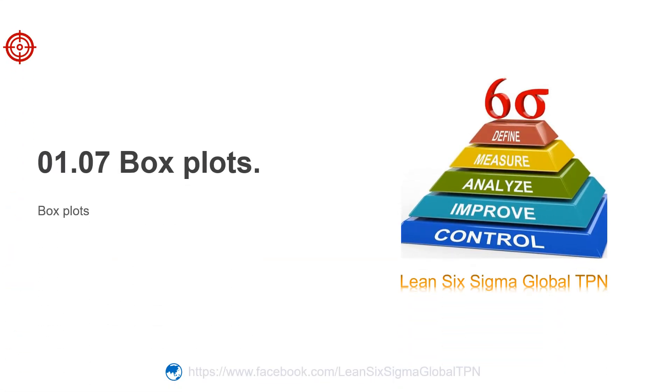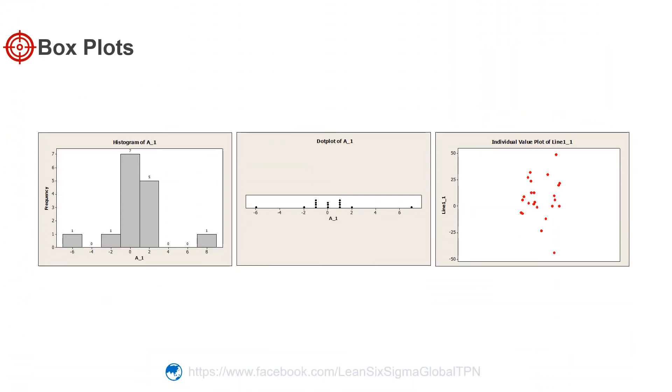Hello friends, today we talk about box plots, so let's get started. So far we have looked at three different graphs to display numeric data, such as the diameter of a circle sampled from a production line. We use histograms, dot plots, and individual value plots.